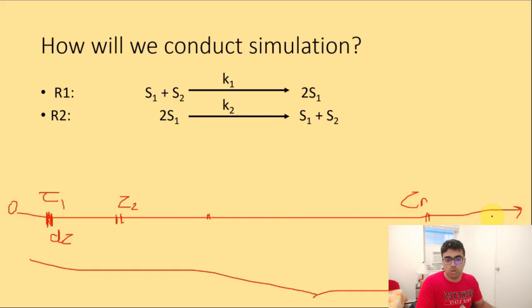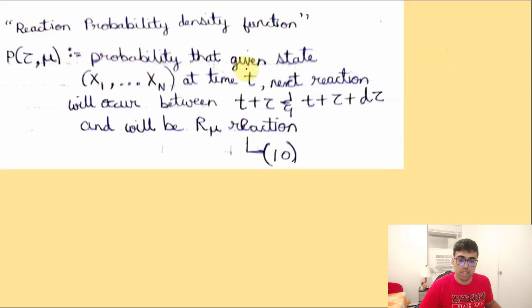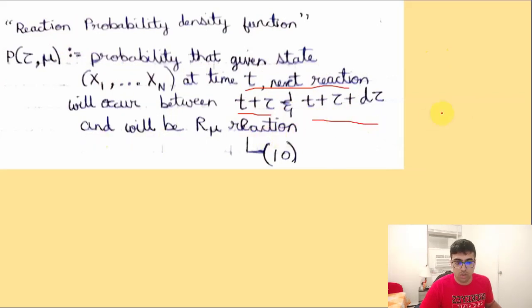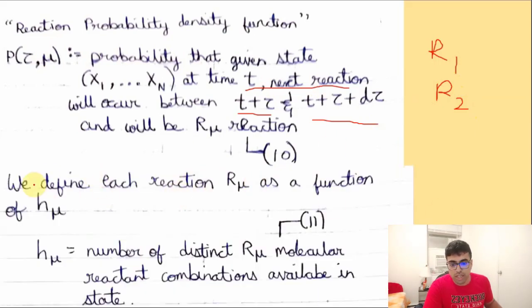To formalize this, we define a reaction probability density function from which we obtain τ and μ. This joint probability density function P(τ, μ) represents: given the current state (X1, ..., Xn) at time t, the probability that the next reaction will occur between t+τ and t+τ+dτ and will be reaction R_μ. Here τ represents how long the system proceeds without any reaction.